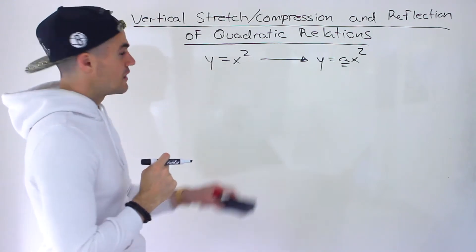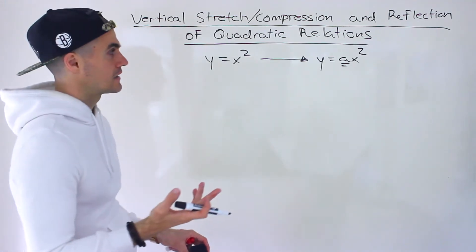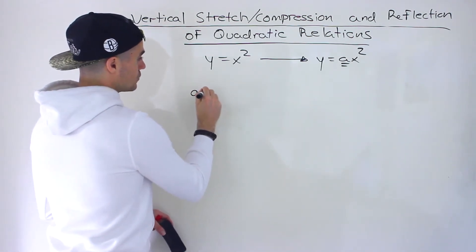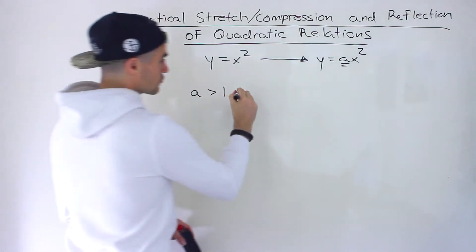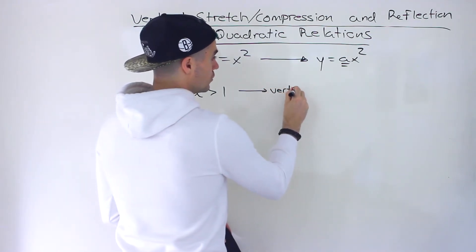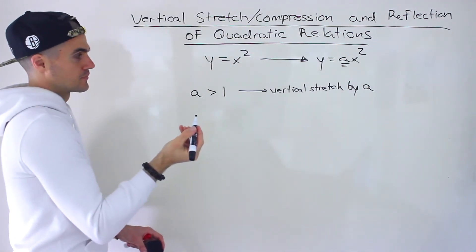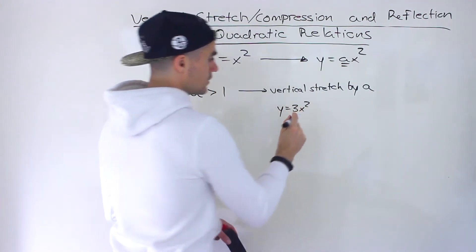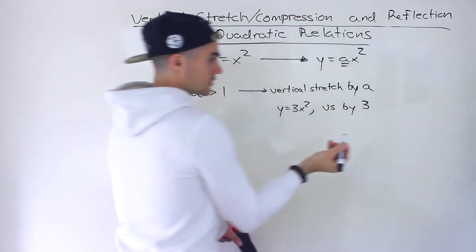How does that a value affect the base function y equals x squared? It really depends on the value that a can take. The first case is if the a value is greater than one. If a is greater than one, then the transformation is going to be a vertical stretch by a factor of a. For example, if we have the function y equals 3x squared, the a value is three — greater than one — so there would be a vertical stretch by a factor of three.